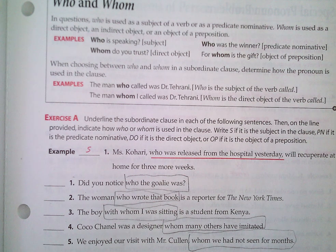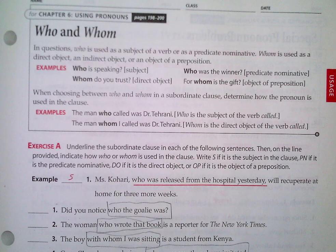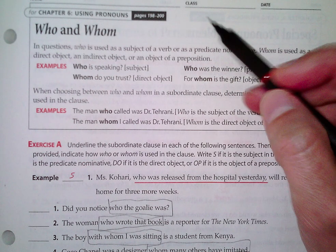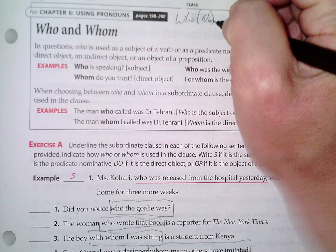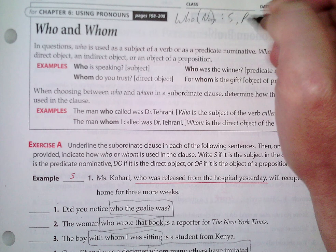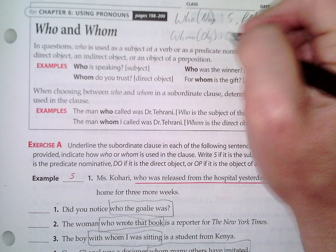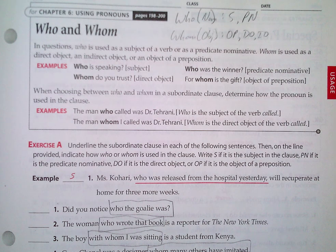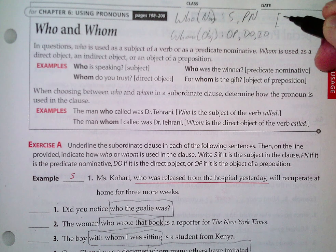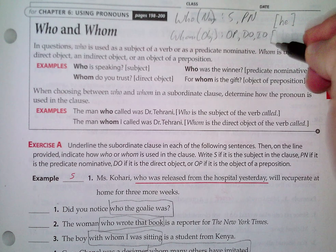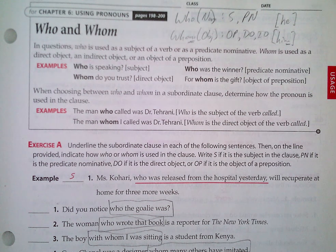Here we are on page 123, which is on who and whom. I always put this at the top of the page when doing who and whom: first, remember that who is the nominative case — who is what you use when it's a subject or predicate nominative. Whom is the objective case, so you use whom when it's the object of a preposition, direct object, or indirect object. For substitution, substitute he for who and him for whom. Him has an M on the end, and whom has an M on the end — if you remember those substitutions, you'll have a better chance at getting these right.